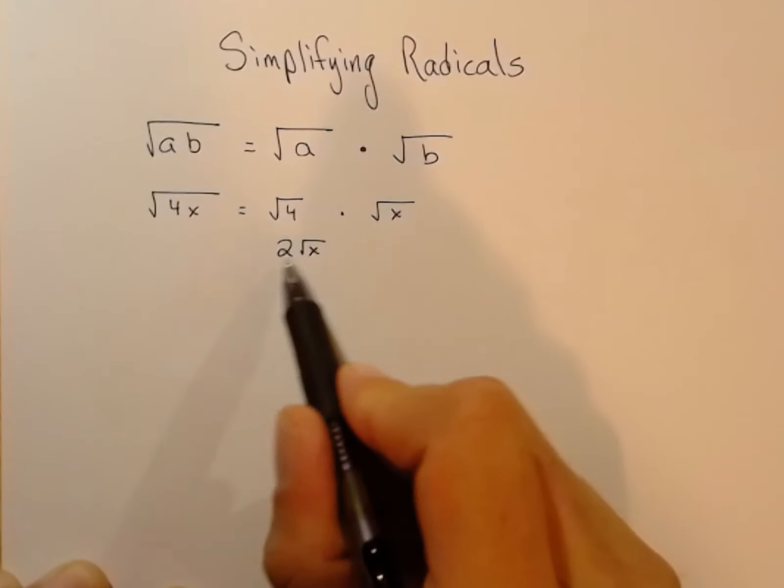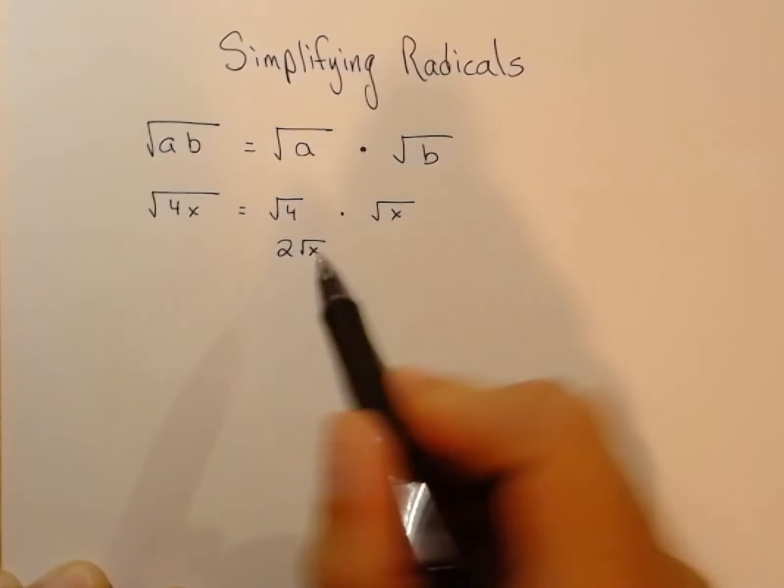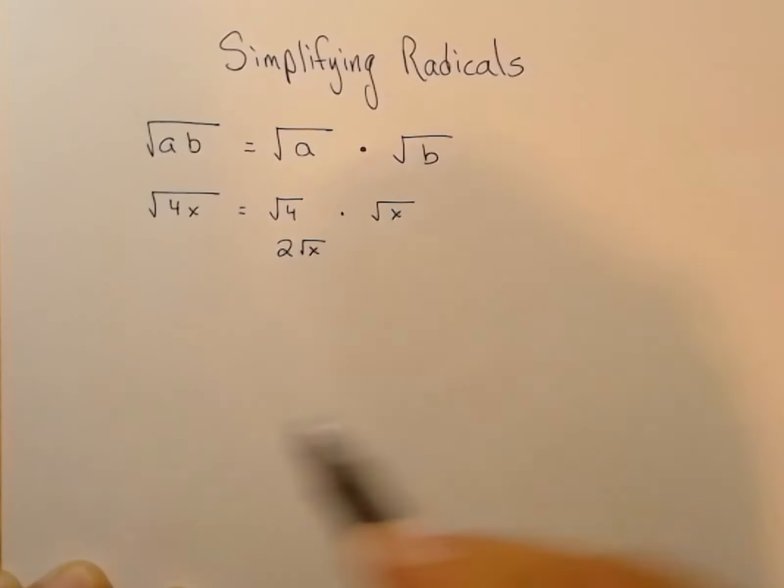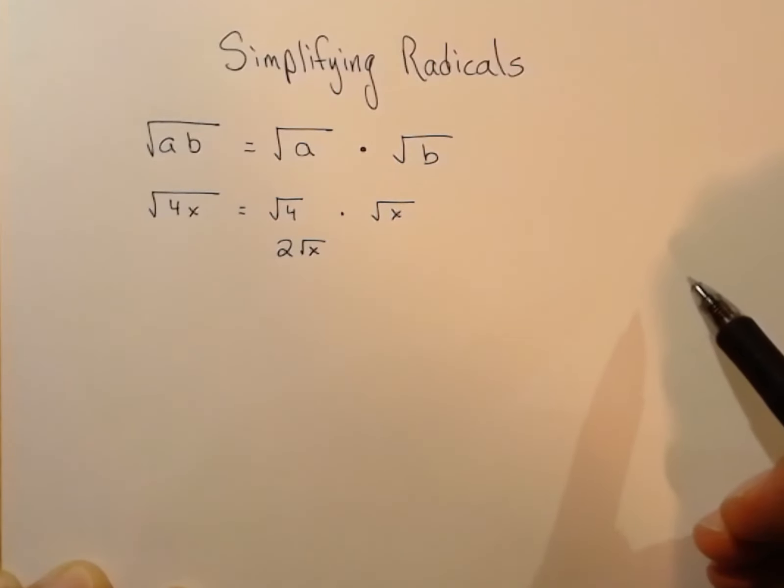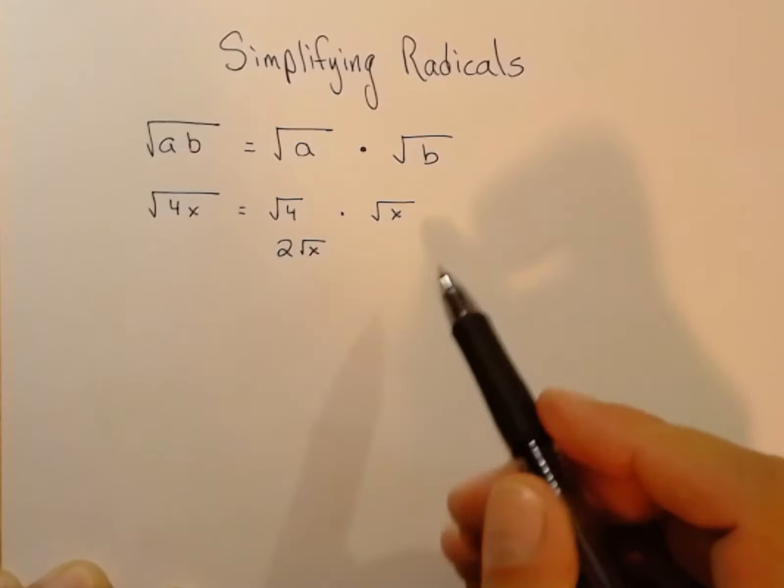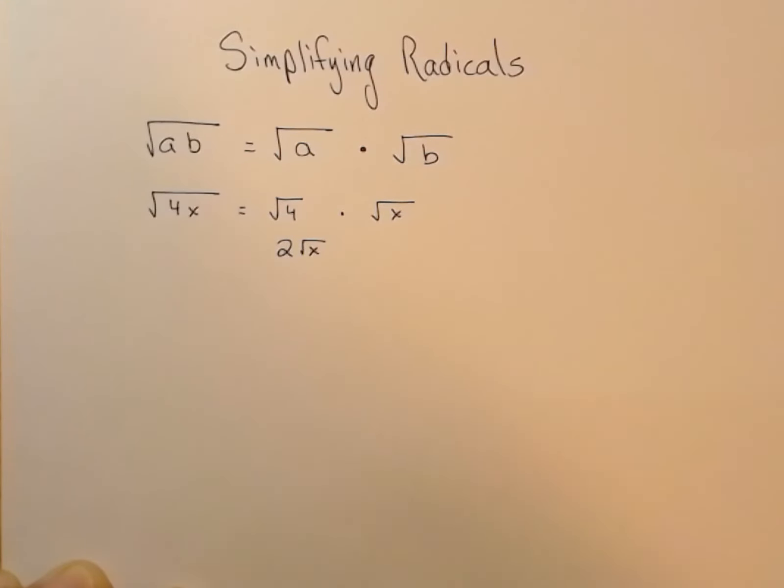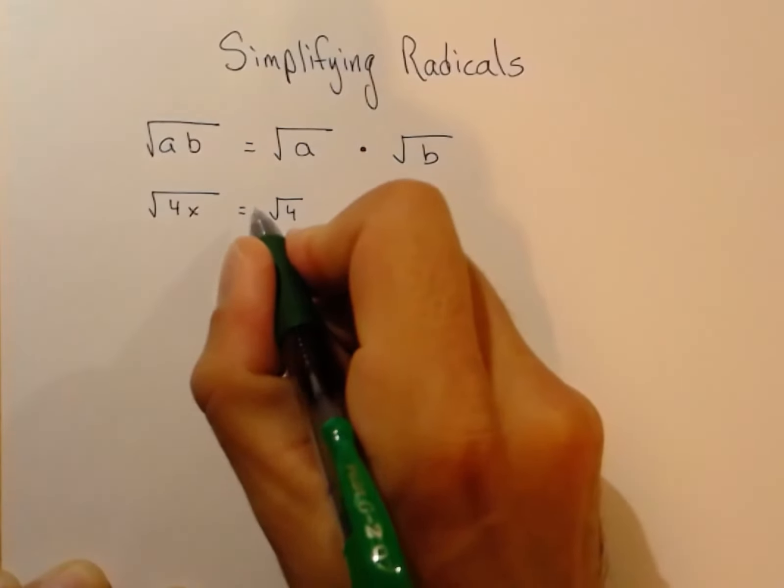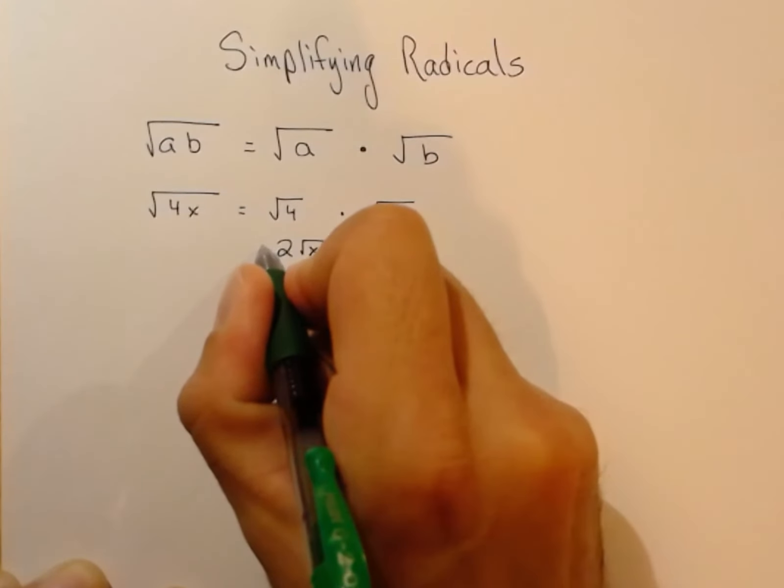Just like with variables, if you have a number in front of a radical expression, multiplication is implied. Technically speaking, with square roots in algebra, there is a plus minus in front of the answer.